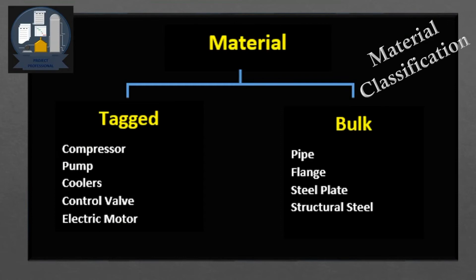Apart from the classification of tagged and bulk, materials are also classified as long-lead and non-long-lead items. Long-lead materials are those which take a long time for procurement — meaning their procurement cycle is quite long in duration — which in turn affects the overall project duration and is critical to the project schedule.